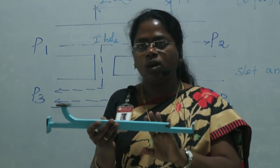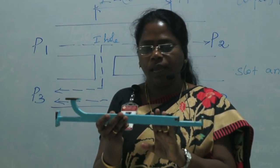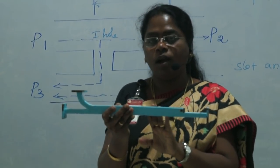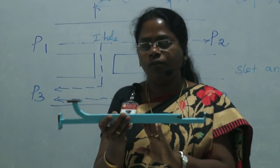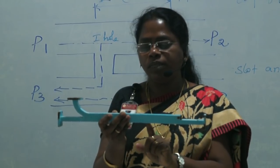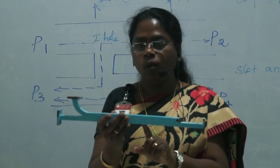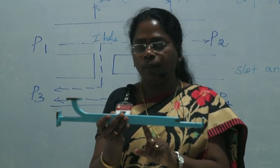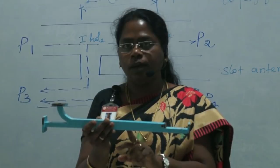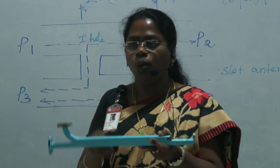The reason it is called a directional coupler is that it is capable of identifying or isolating the forward power from the backward power. Depending on the number of holes inside the waveguide, it is classified into a Bethe hole or single-hole coupler, double-hole coupler, four-hole coupler, and Schwinger coupler.